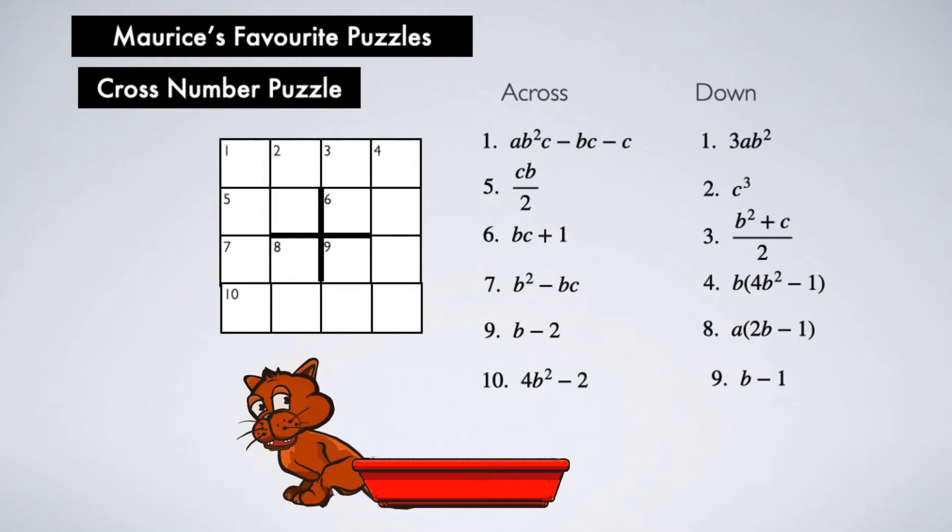The aim of this puzzle is to solve the cross number and at the same time get the values of a, b, and c.